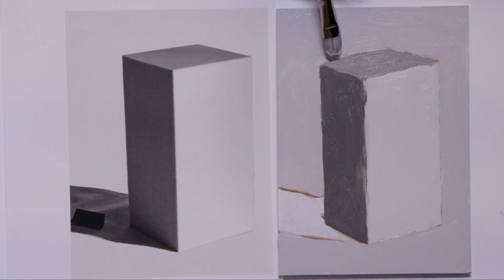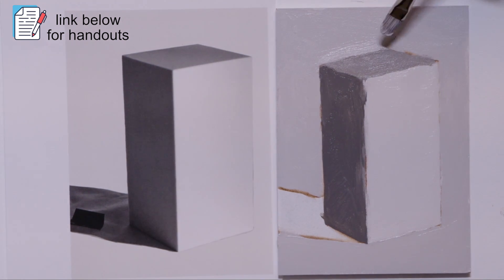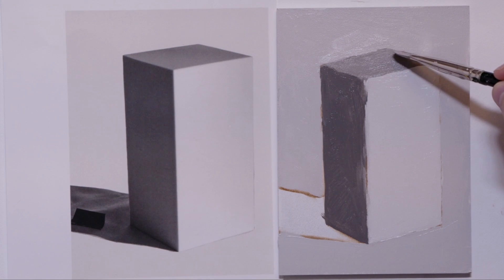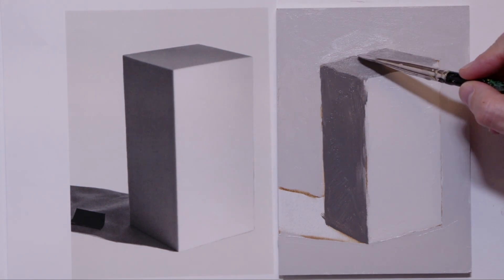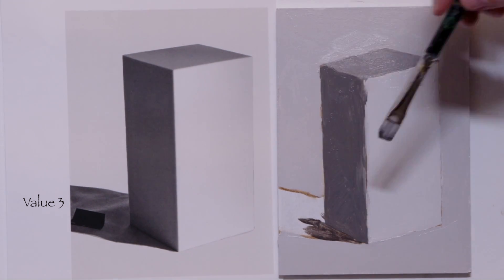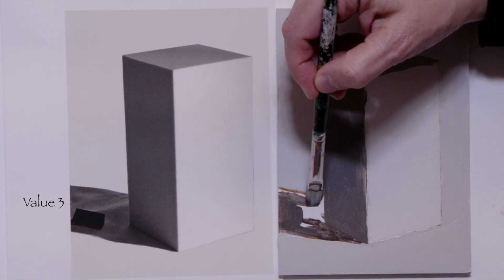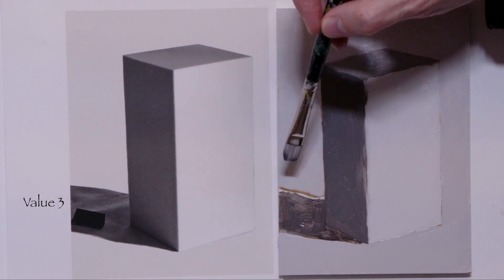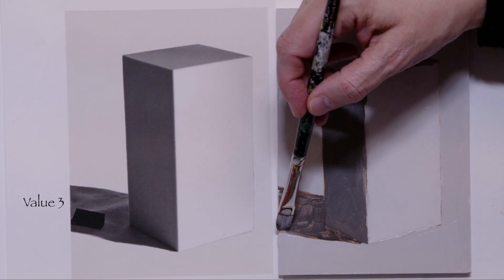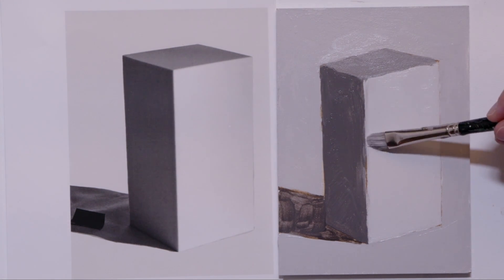So I'm going to clean up the edge using the paint, the background and the paint. And now onto the cast shadow. And this one I just chose a 3.5 or a value 3 so that it's a little bit darker than the shade side plane. We're going to come back and clean. And I'm going to continue to fuss with this because I want to make it look the best that I can make it look.